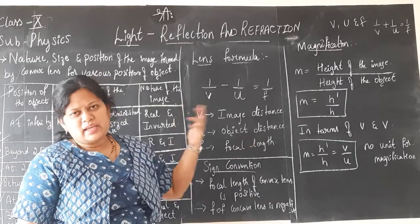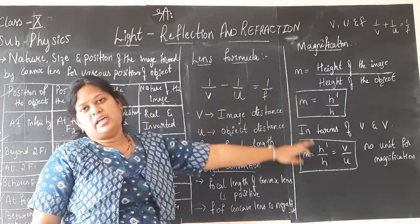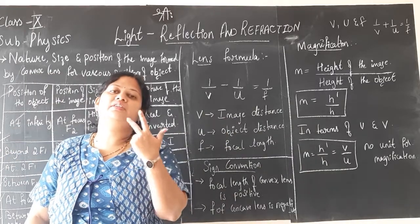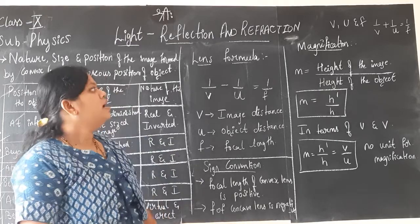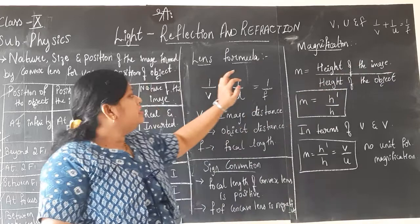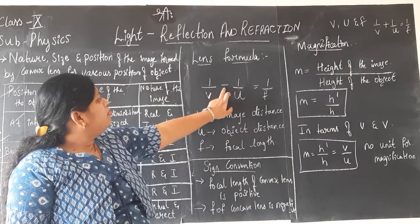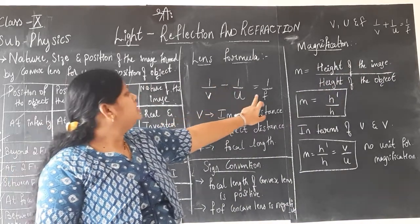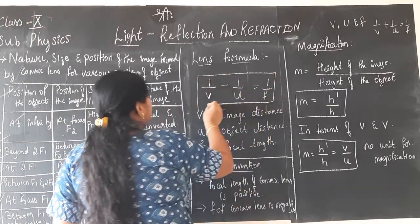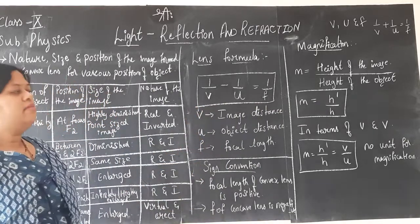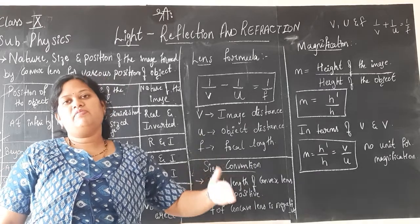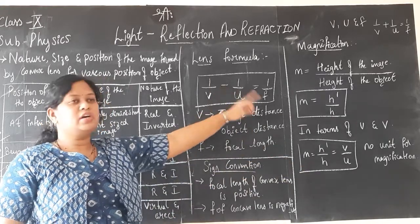The lens formula also gives us the relationship between the image distance, object distance, and the focal length. But the difference is: in the mirror formula there is a plus sign between 1/v and 1/u, whereas in the lens formula there is a minus sign. So the lens formula is 1/v − 1/u = 1/f.